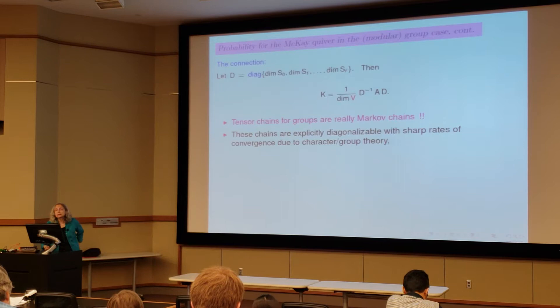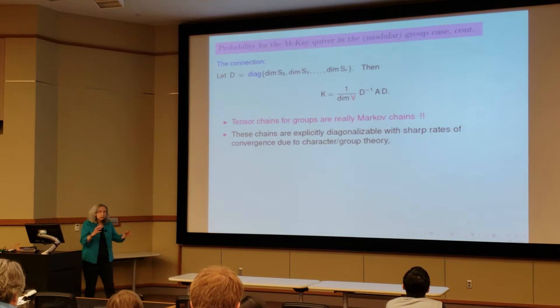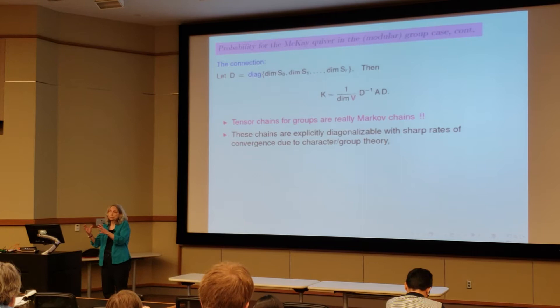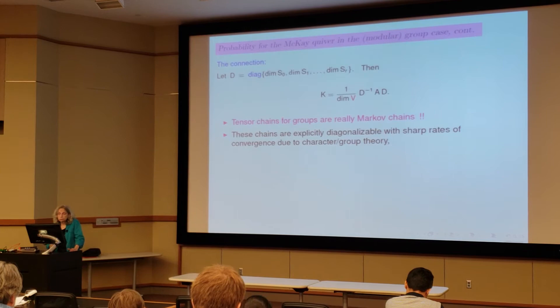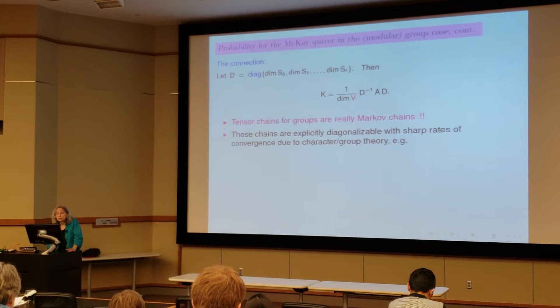So these chains are explicitly diagonalizable. And if you have a Markov chain, what you want to know is how rapidly does it converge to the stationary distribution. So you can use character theory, group theory, to figure that out.